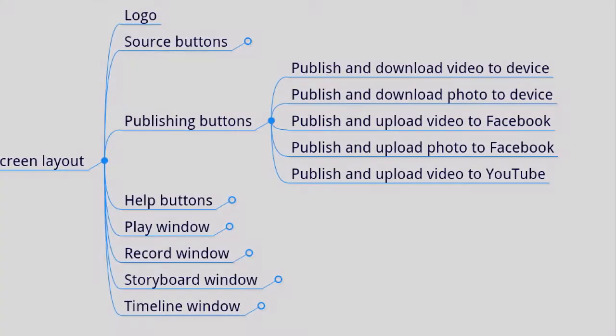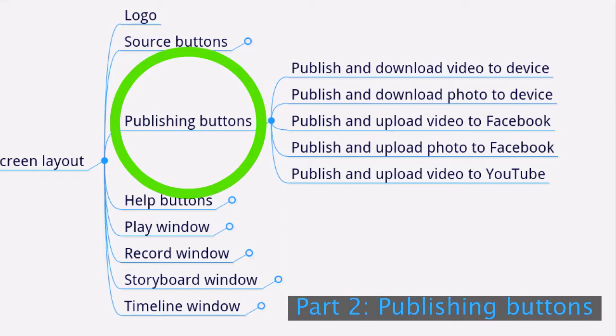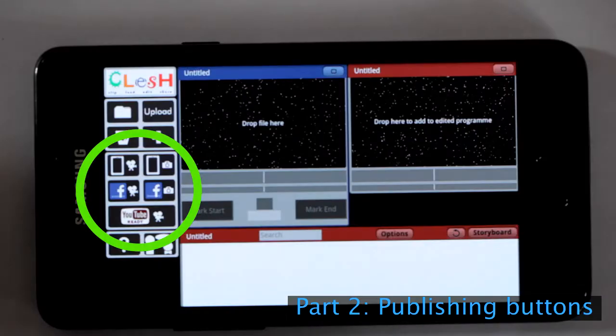This series of videos tells a bit about Clash. The next block of buttons is the publishing icons. There are five icons here.